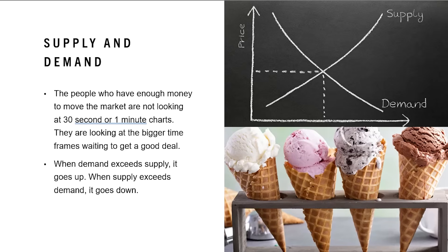The people who have enough money to actually move the market are not looking at 30-second or 1-minute charts — they are looking at the bigger time frames, waiting to get a good deal. Remember the law of supply: the higher the price of something, the more sellers will sell it. Smart money is not buying huge positions at an all-time high. Why would they do that when they could just wait a week and buy it for a much better price? When demand exceeds supply, it goes up. When supply exceeds demand, it goes down. When it gets to a good buying price, big money steps in and chews through all of the sell orders to drive it up.